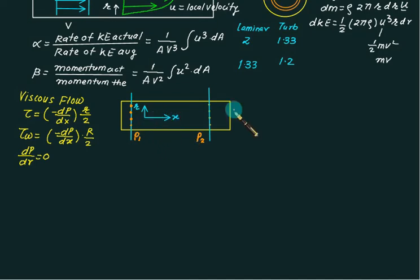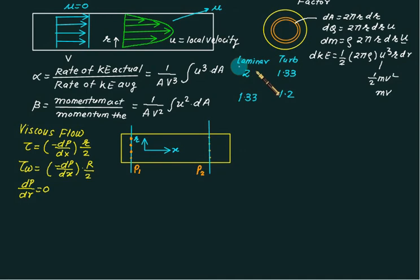For this case, your distribution will be parabolic distribution. The velocity at any radius is given as 1/(4μ) × (-dp/dx) × (R² - r²).